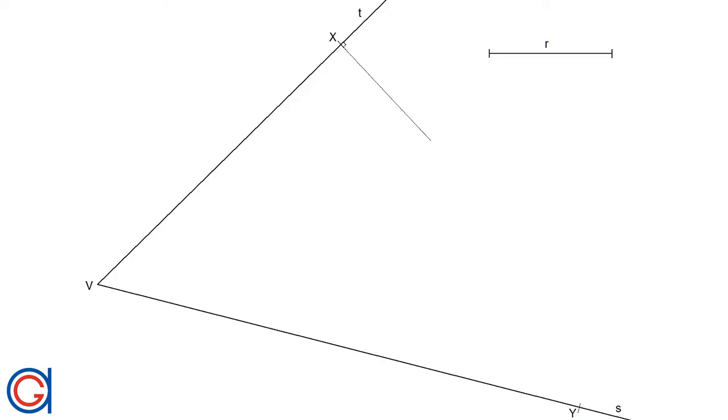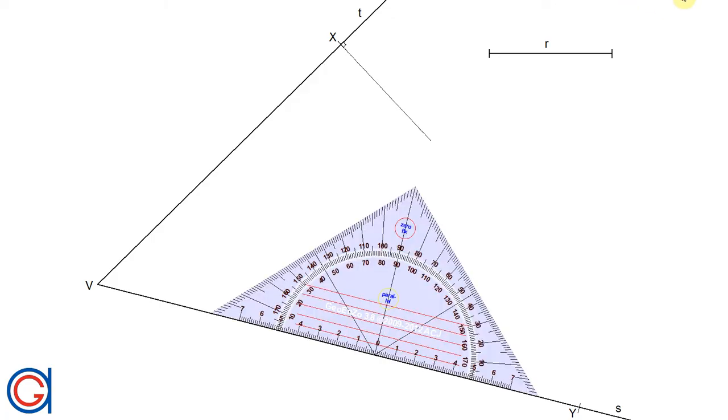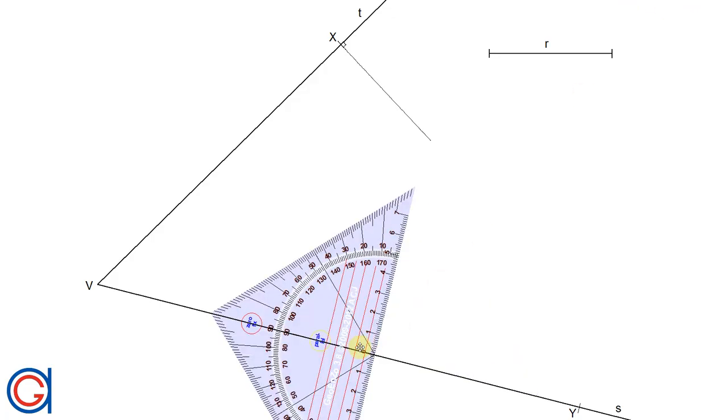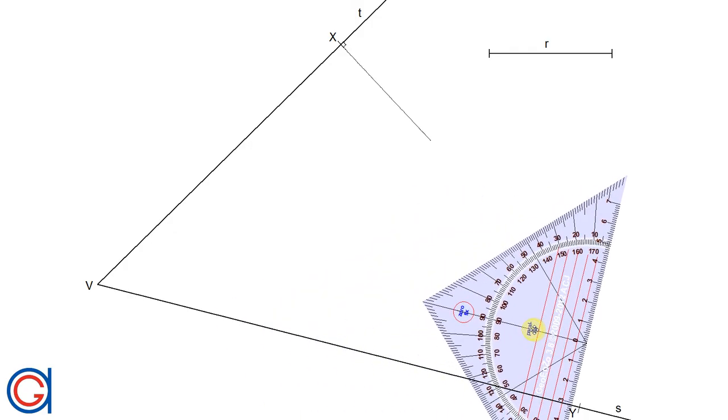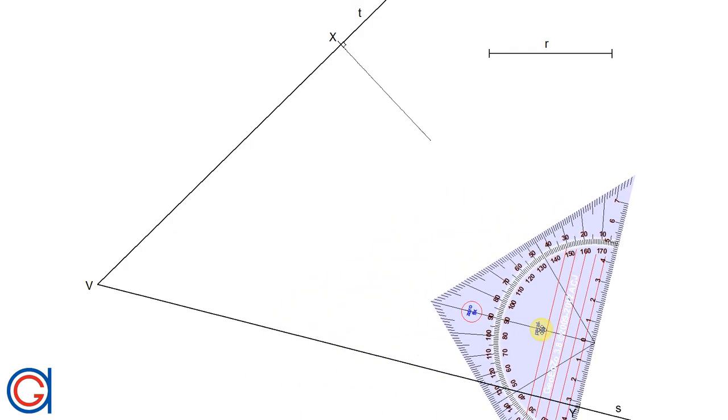Now we are going to do the same thing, we are going to pick another point Y on the given line S, as can be seen here, and draw a perpendicular line to this also. Again, it must be slightly longer than the given radius R.